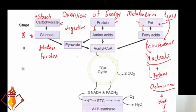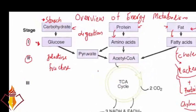In the second stage, what happens to these monomers? The second stage is called the formation of acetyl-CoA. Glucose makes pyruvate, and pyruvate is converted into acetyl-CoA. Similarly, amino acids are converted into acetyl-CoA — but amino acids can also take another route: first to pyruvate and then into acetyl-CoA. Similarly, fatty acids are oxidized to acetyl-CoA. So all the food is essentially making acetyl-CoA, which is very important.